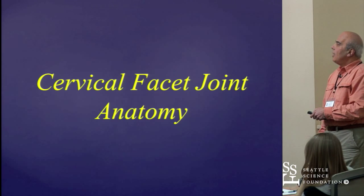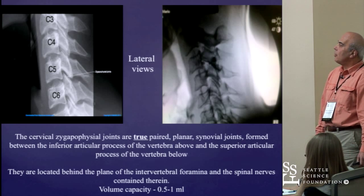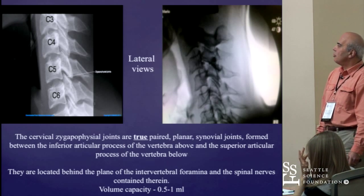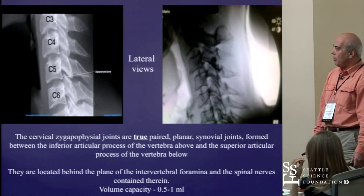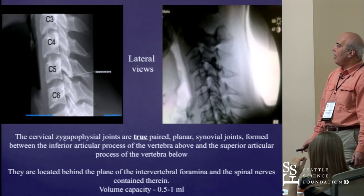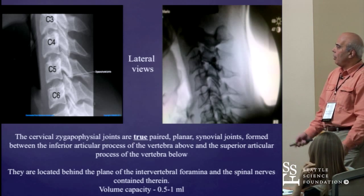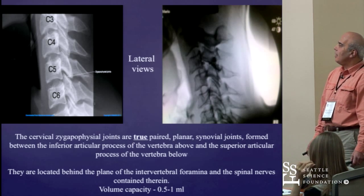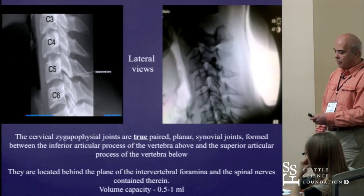Cervical facet joint anatomy. The cervical facet joints, like the lumbar facet joints, are paired planar synovial joints between the inferior articular process of one vertebra and the superior articular process of the vertebra below. They are located behind the plane of the intervertebral foramen at the cervical spine level and the spinal nerves within the foramen. They have a lower volume capacity than lumbar facet joints, able to contain no more than 0.5 to 1 milliliter of volume.